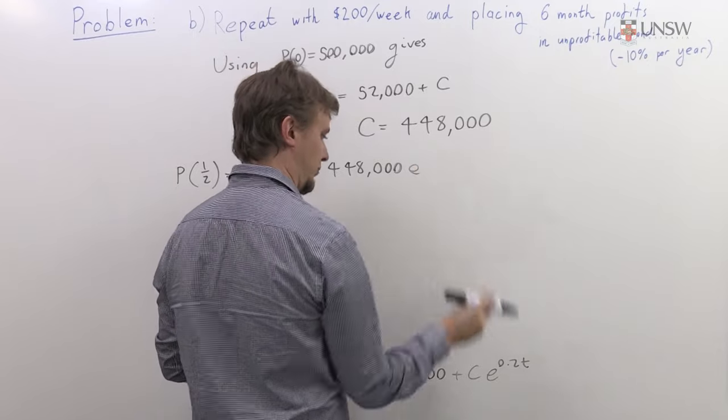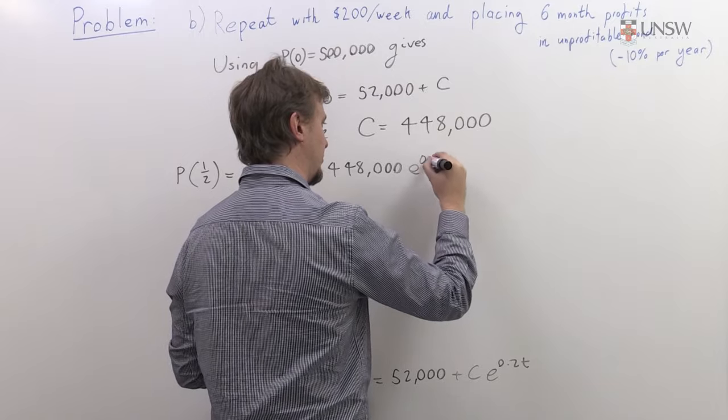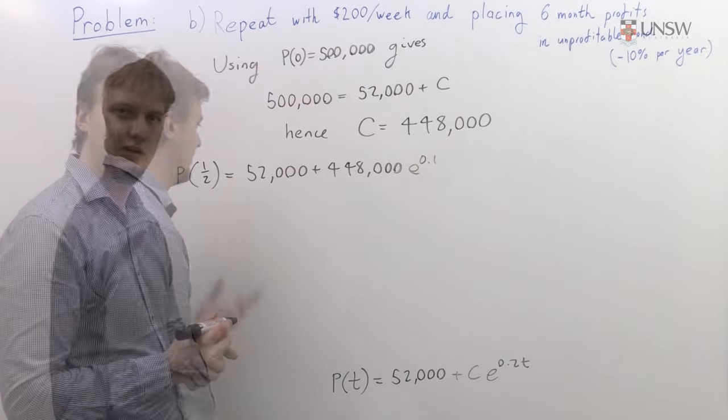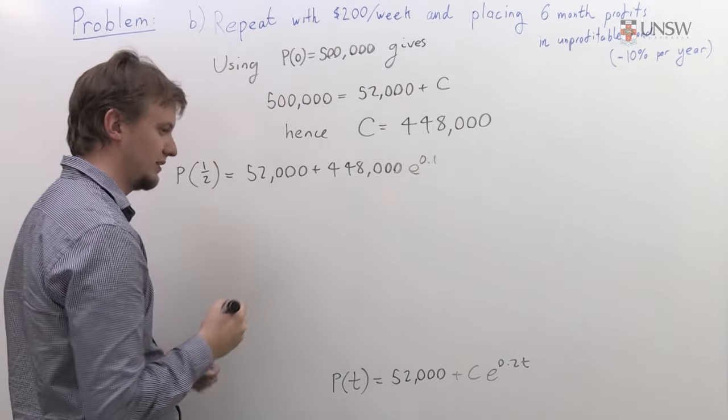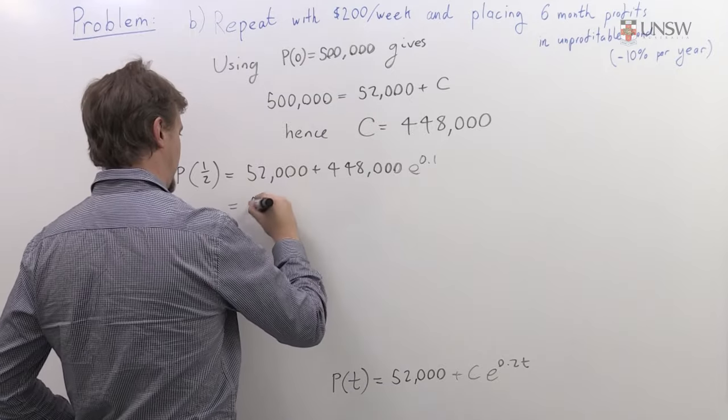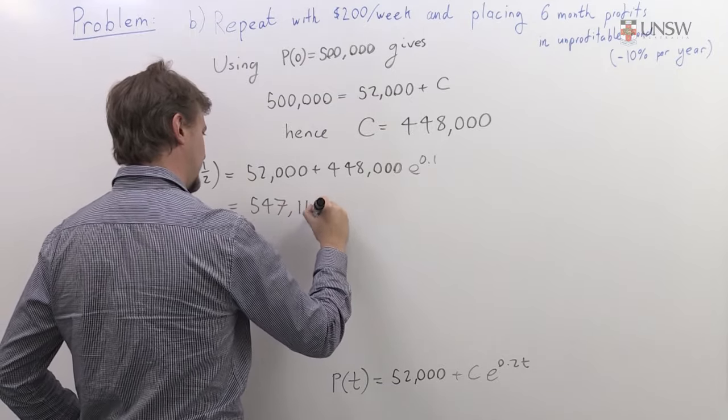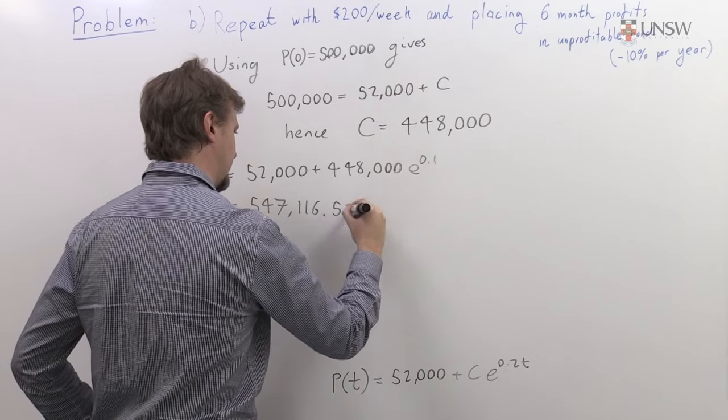Put in a half here, you get e to the 0.1. And again, we can plug that into a calculator to get $547,116.57.